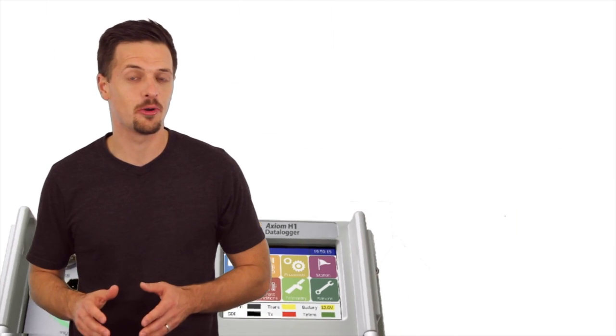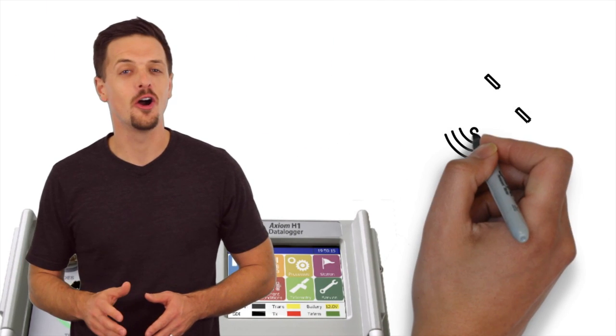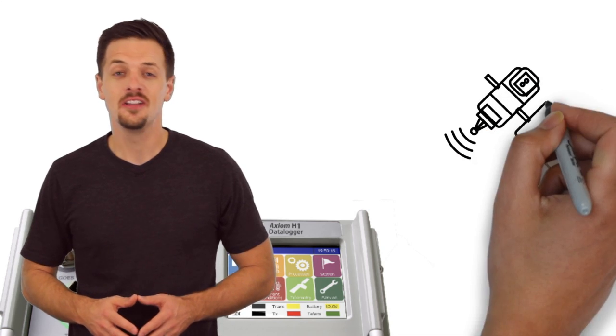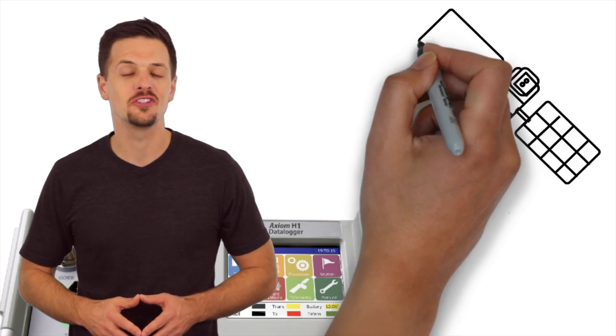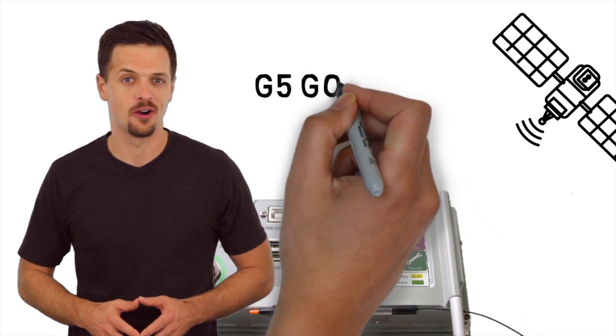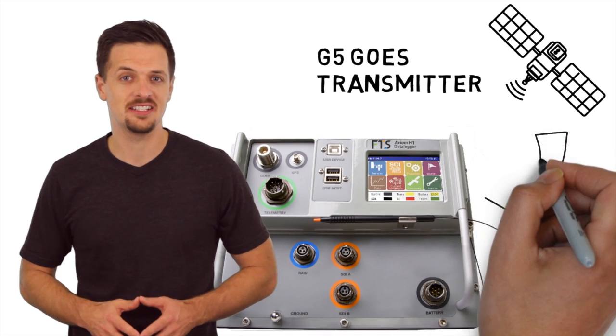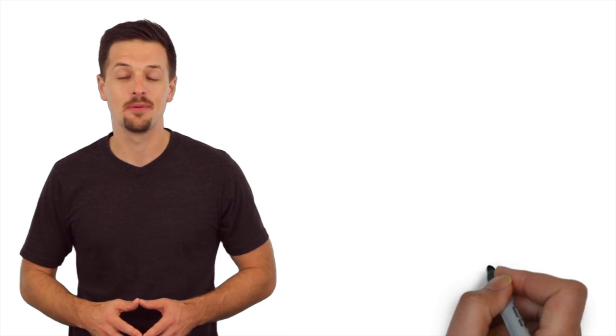Number 10, all Axiom data loggers are available with an integrated GOES transmitter, our own field-proven G5. It's the same GOES transmitter that's the standard for all weather stations in the North American fire weather network. The G5's power consumption is the lowest of any leading DCP.